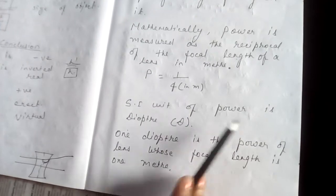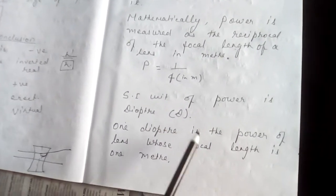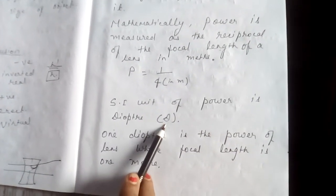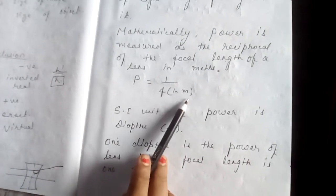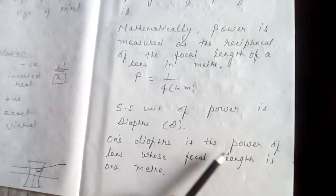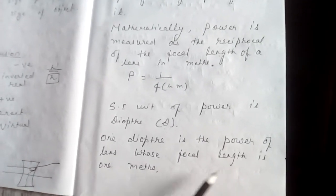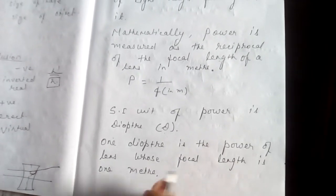SI unit of power is diopter. How you will define 1 diopter? 1 diopter when focal length should be 1 meter. So, 1 diopter is the power of lens whose focal length is 1 meter.